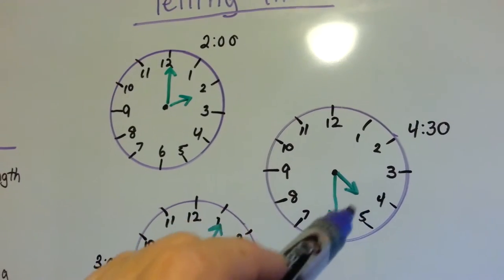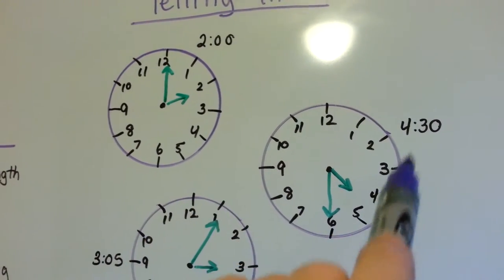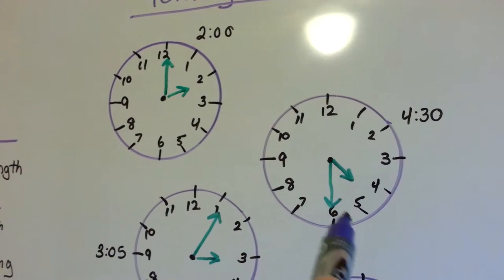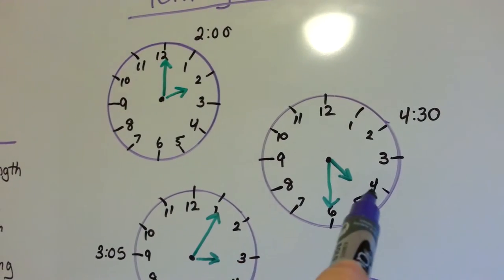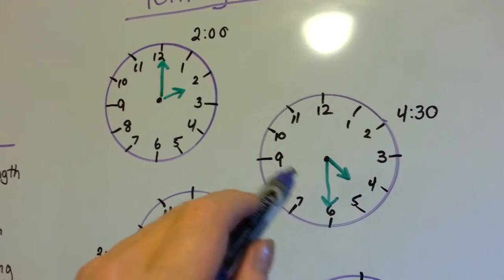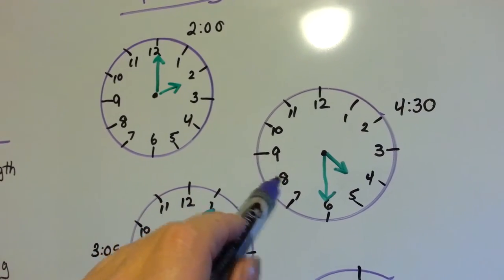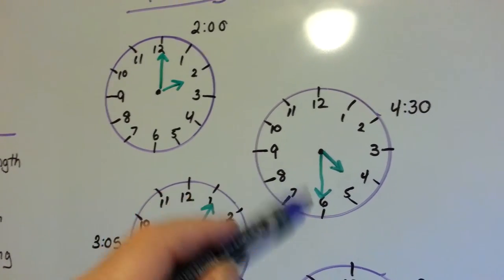If the hand is in between two numbers and the big hand is on the 6, then that means it is 4:30 or 5:30 or 6:30, whatever the hour hand is in between, it is the one back. If it's in between the 5 and 6, then it's the 5. If it's in between the 8 and 9, then it's the 8. It always goes back to the one behind it.